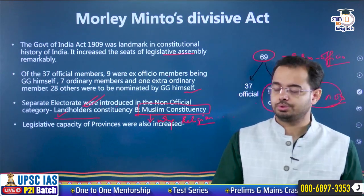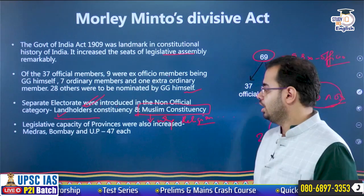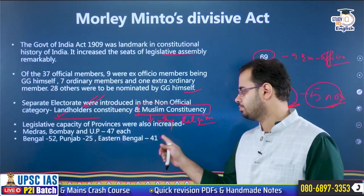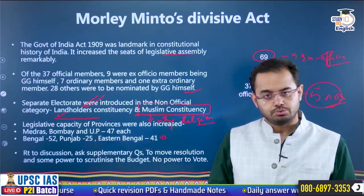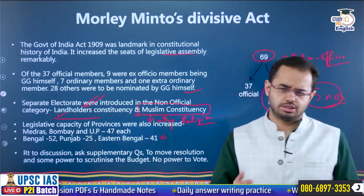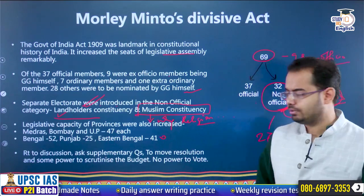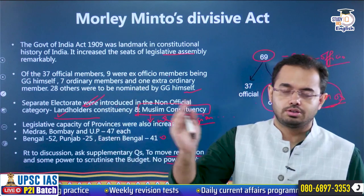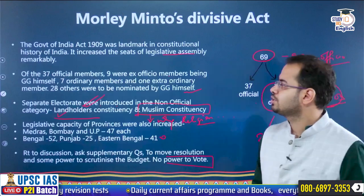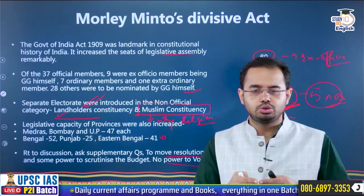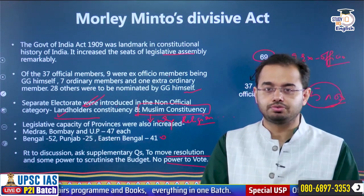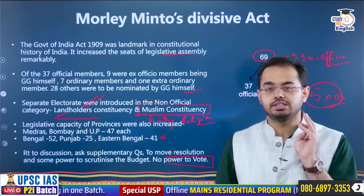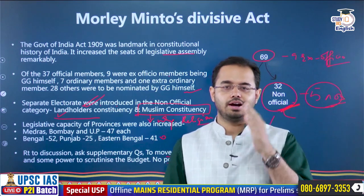Legislative capacity of provinces was also increased. Madras, Bombay, and United Provinces had 47 members each; Bengal was 52; Punjab was around 25; and Eastern Bengal province was 41 — though Eastern Bengal province was later dissolved. Members were given the right to discussion and to ask supplementary questions, with some powers to scrutinize the budget, but not full power to vote the budget — only some sections. The Morley-Minto reforms were just an attempt to introduce communal politics in India, at a point when Indian nationalism was at its weakest. The split happened in 1907, and just within two years you had this divisive act. Learn the strategies of the Britishers — that is how they divided countries.